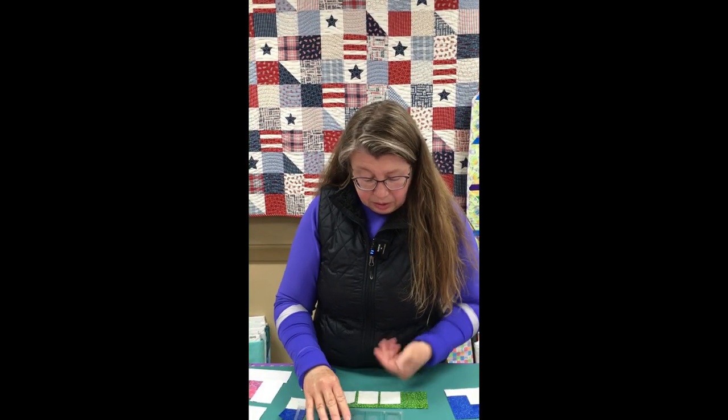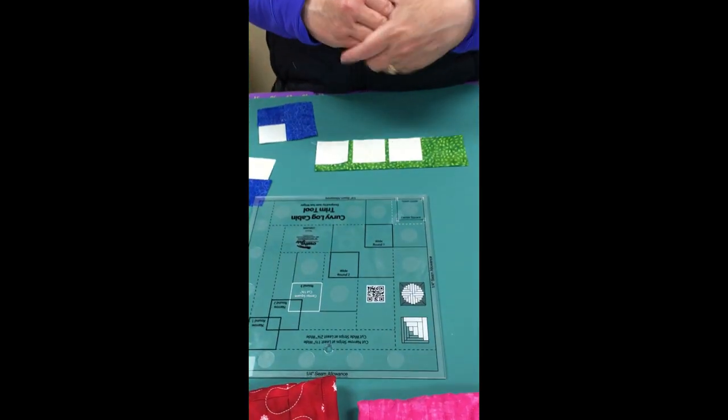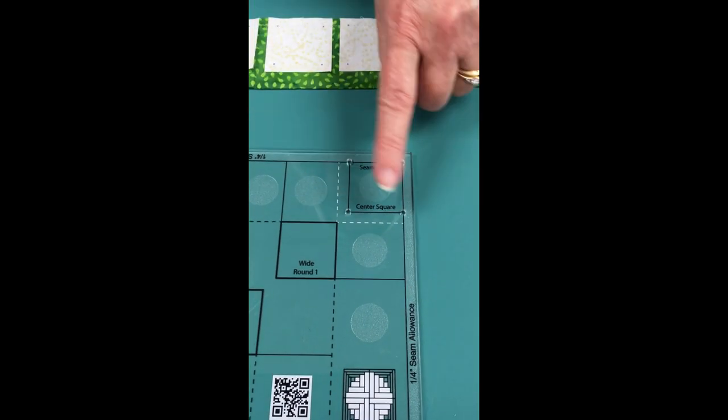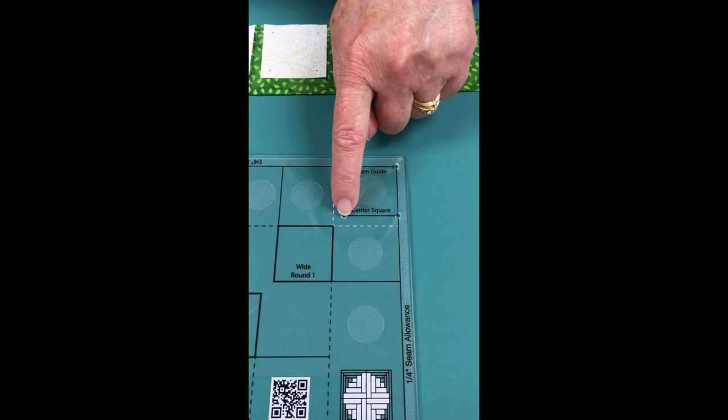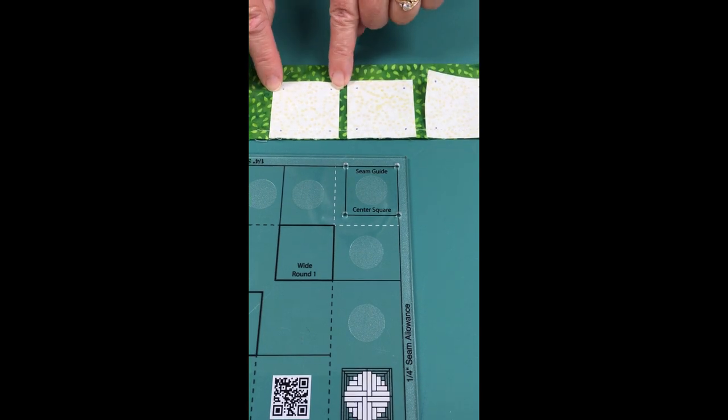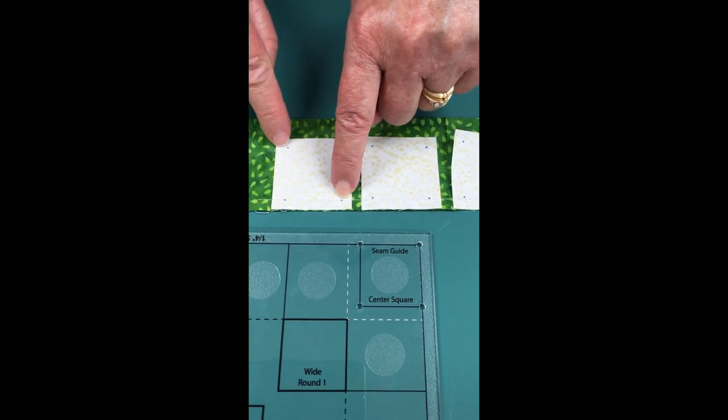To use the tool, the one thing you must cut exactly is the center square at 1¾ inches. Everything else can be rough cut since you'll be trimming. The ruler has little holes so you can put a pen through and add dots to your fabric. These dots mark the corners of your block so you know where your seam allowance should be, giving you a cross-check for a nice square start.